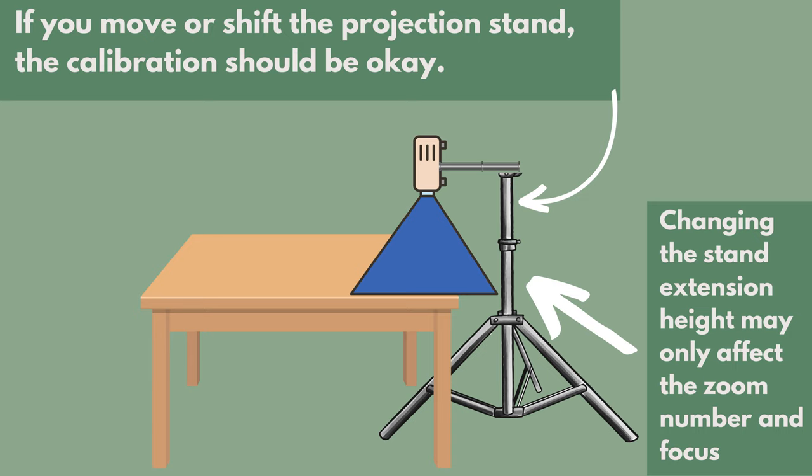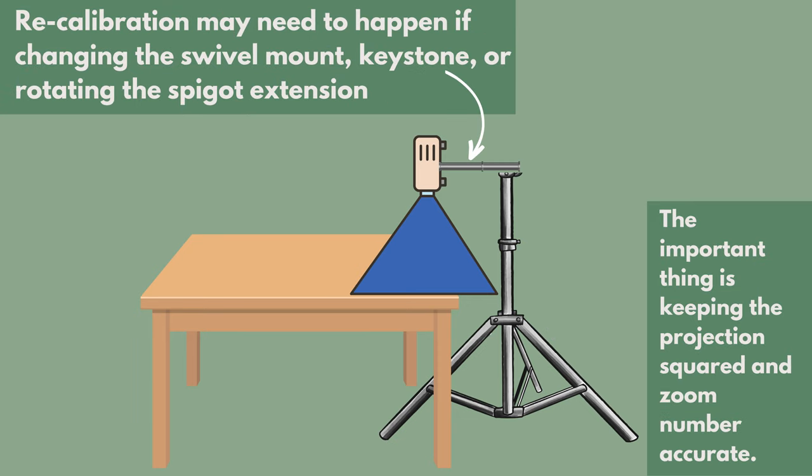If you move or shift the projection stand, the calibration should be okay. Changing the stand extension height may only affect the zoom number and focus, but recalibration may need to happen if changing the swivel mount, keystone, or rotating the spigot extension. The important thing is keeping the projection squared and the zoom number accurate.